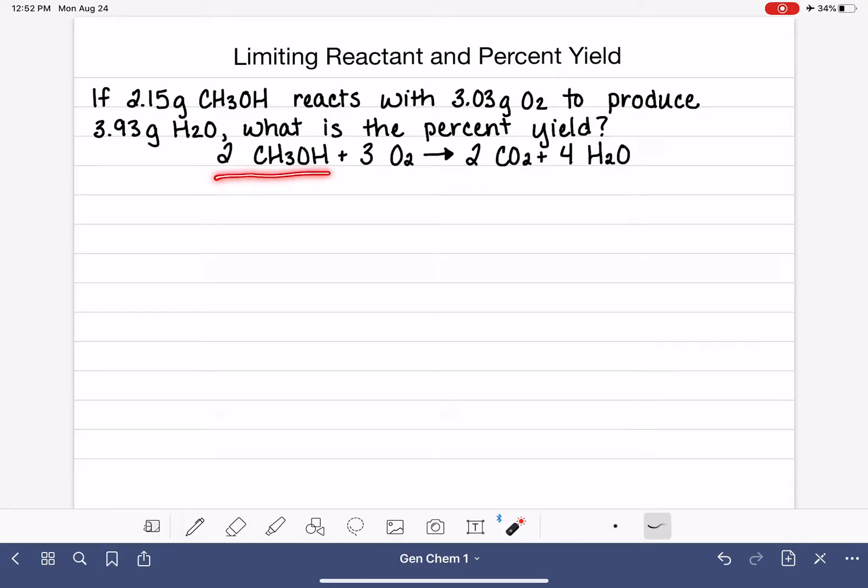So here's the chemical equation for the reaction that we're going to be focusing on in this problem. And what I'm going to do is start by taking the information from the problem statement itself and just writing it underneath the balanced equation so that we have it for handy reference. The problem is telling us that we have 2.15 grams of methanol CH3OH, so I'm just going to write that down here, 2.15 grams.